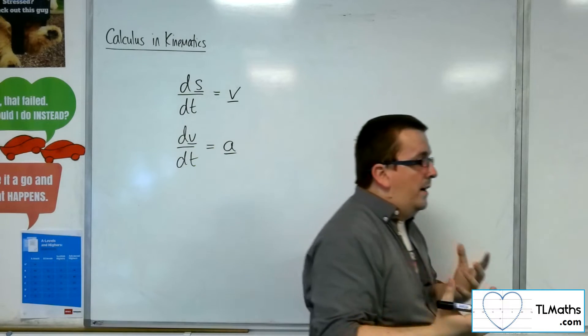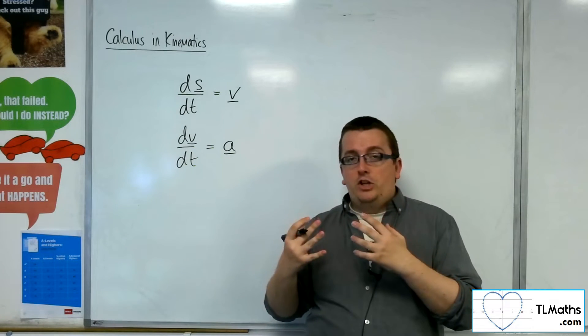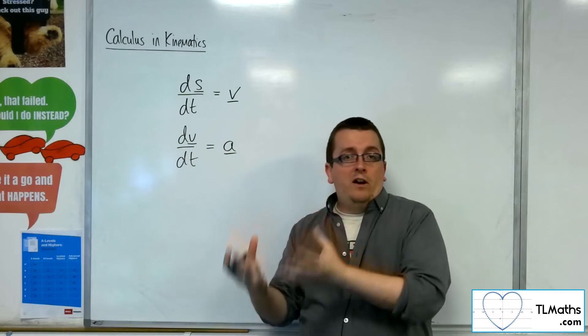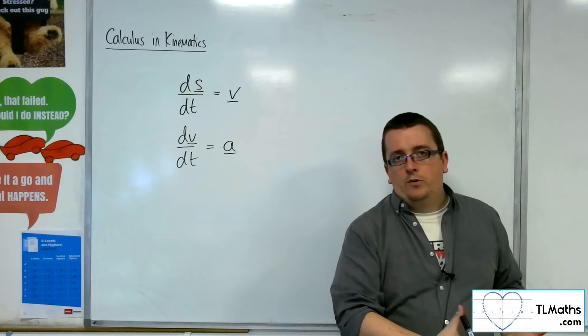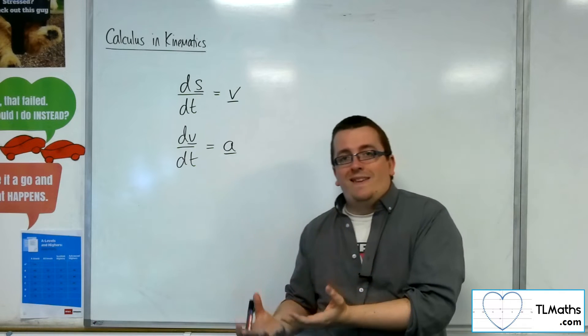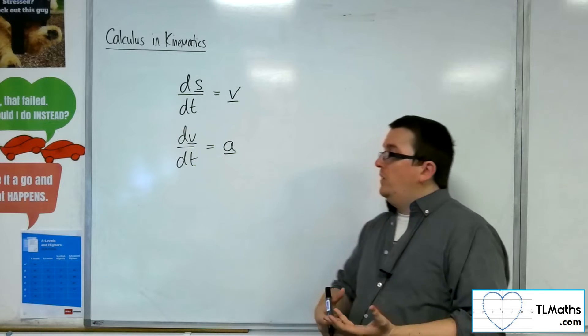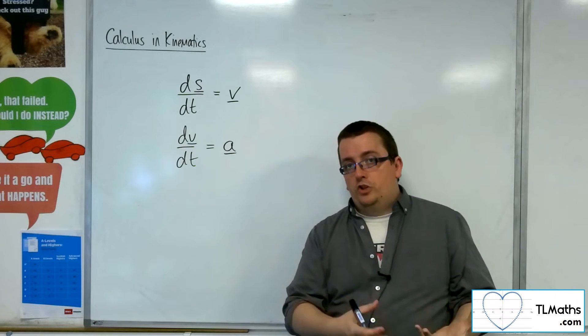How that's going to work is I'm going to differentiate the different components separately. I'm going to have an i component and a j component, so I can differentiate the i and then differentiate the j, the coefficient of the i and the j.